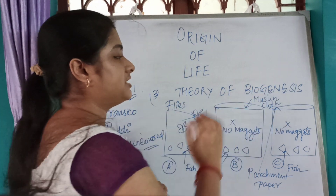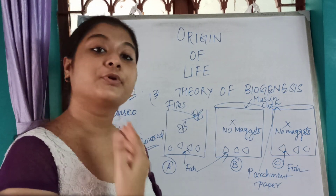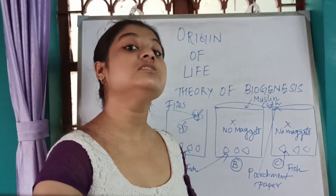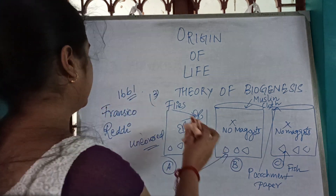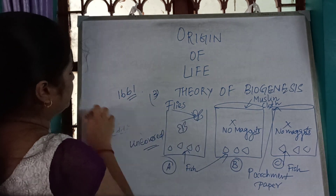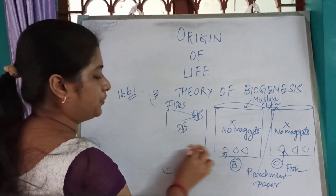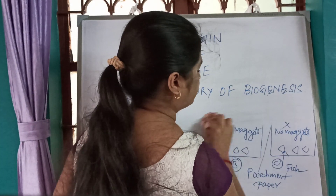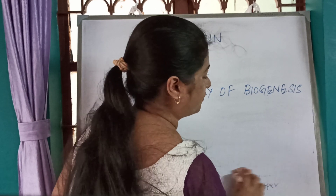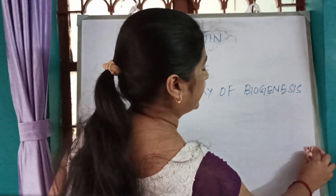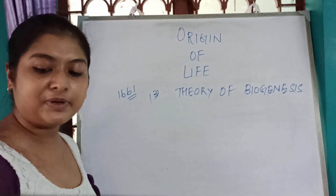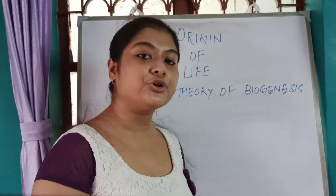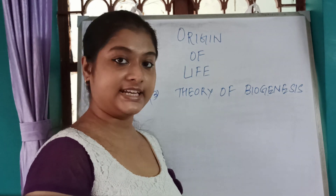This theory of biogenesis was also proved by another scientist — Abbey Lazaro Spallanzani — around the year 1767. He also performed an experiment and proved the theory of biogenesis, thereby disproving the theory of spontaneous generation.